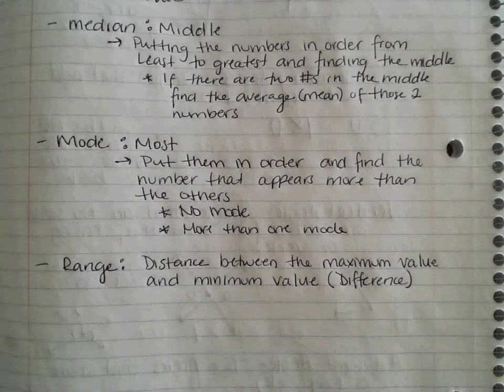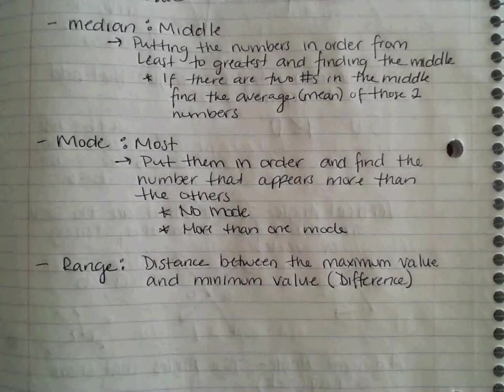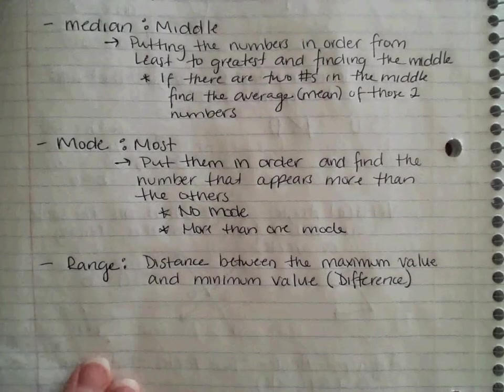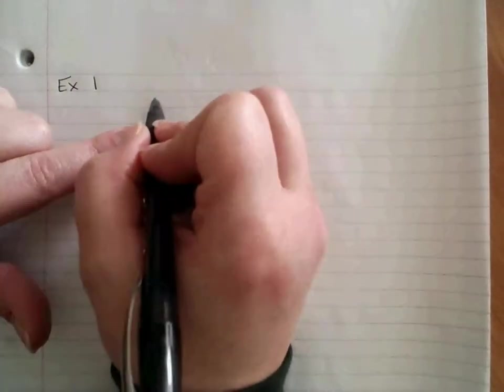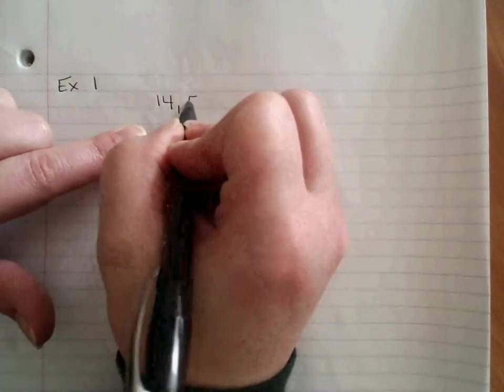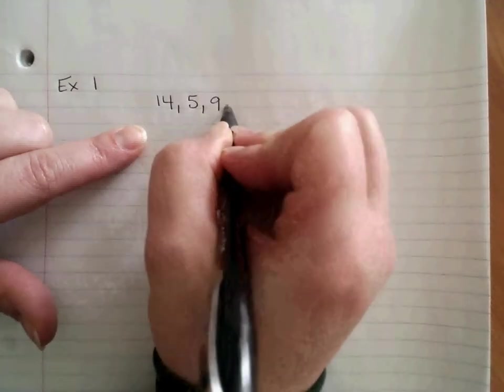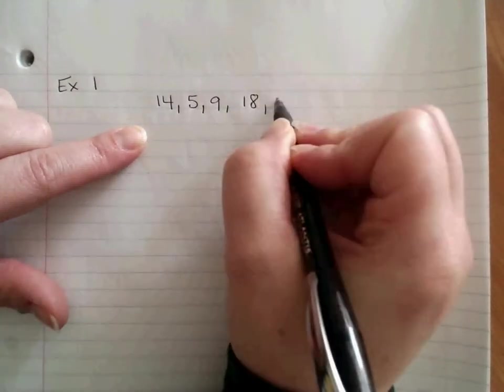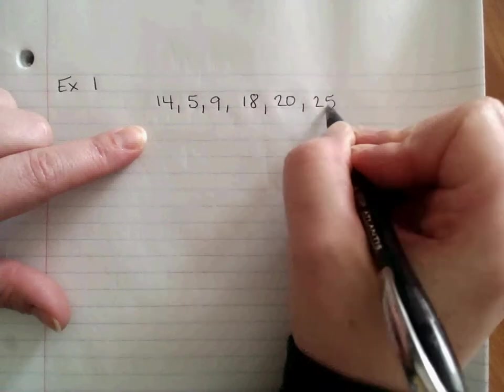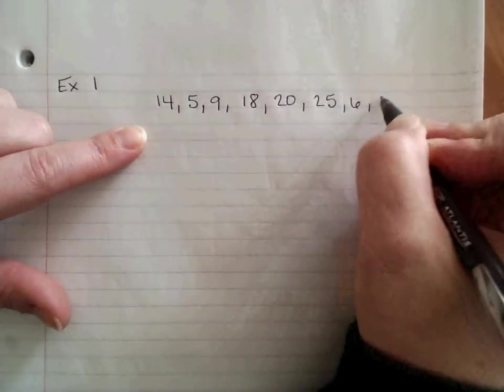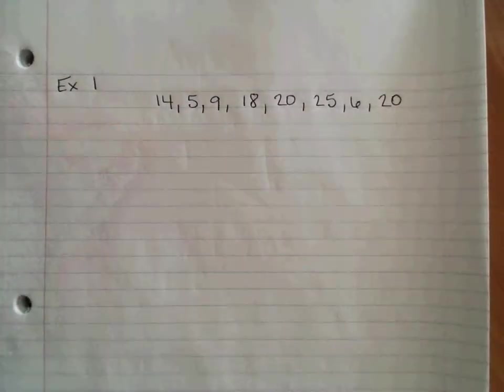So now we are going to look at two examples. I am going to turn my page. I am going to use a different page. So example number one. If I give you the numbers 14, 5, 9, 18, 20, 25, 6, and 20.